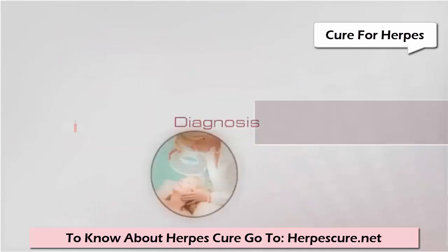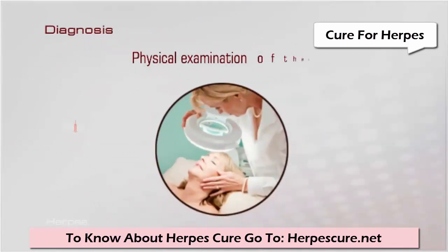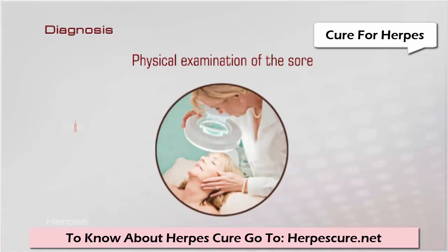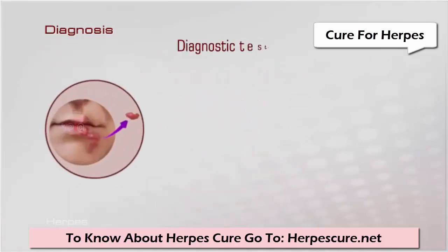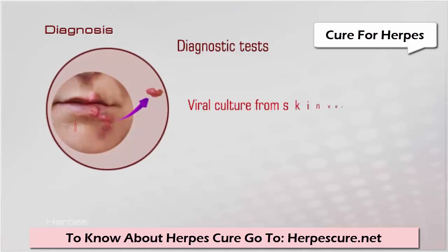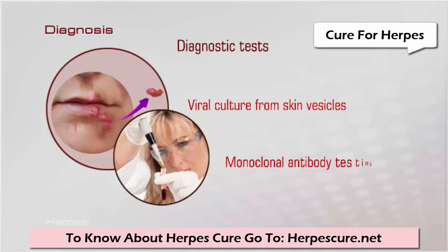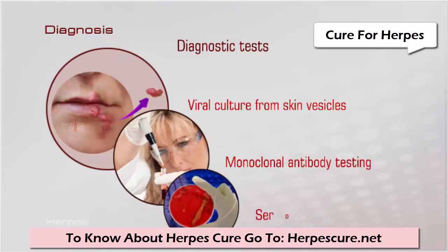Your doctor will make a diagnosis based on your detailed history and physical examination of the lesions. Some tests that help to confirm the diagnosis include viral culture from skin vesicles, monoclonal antibody testing, and serology.